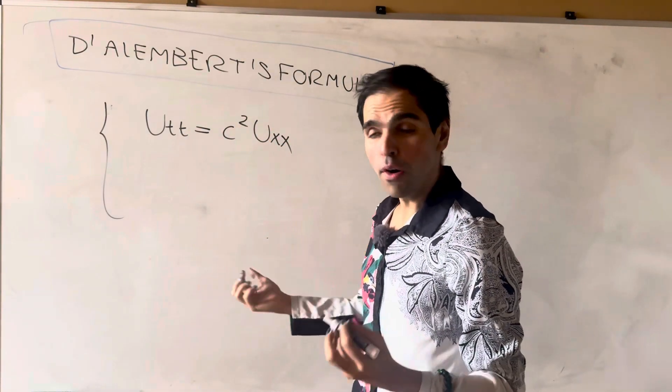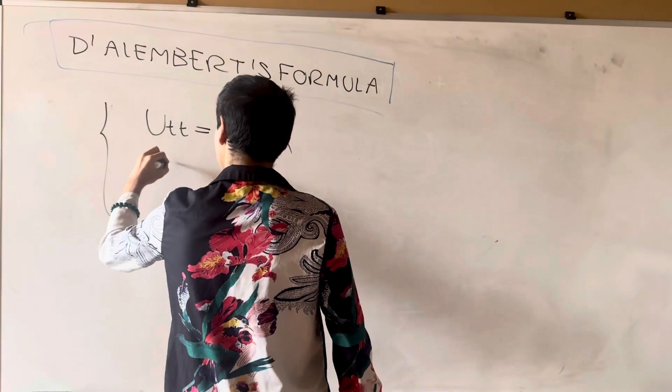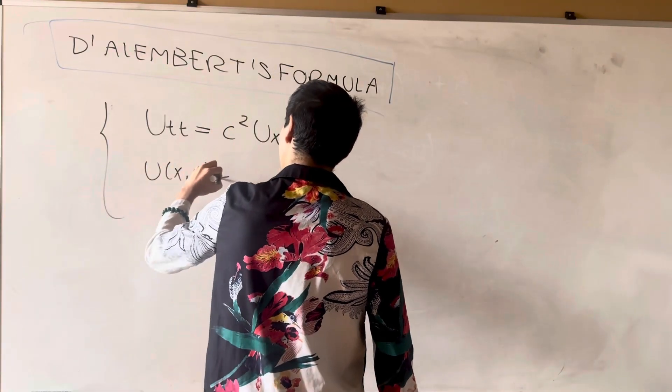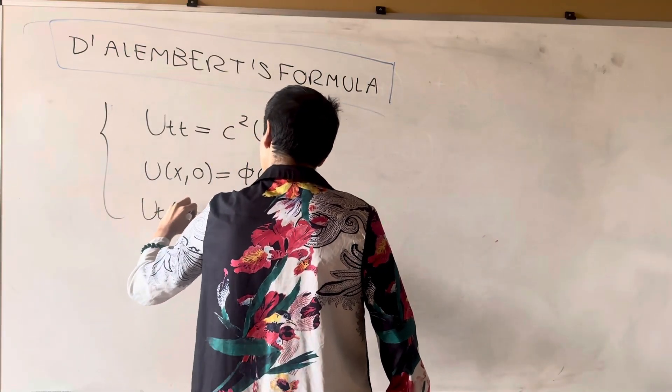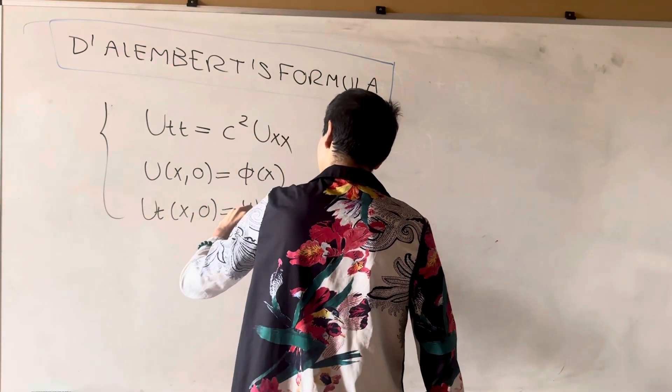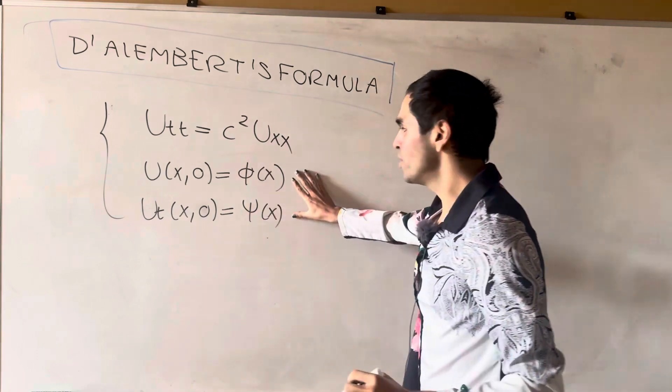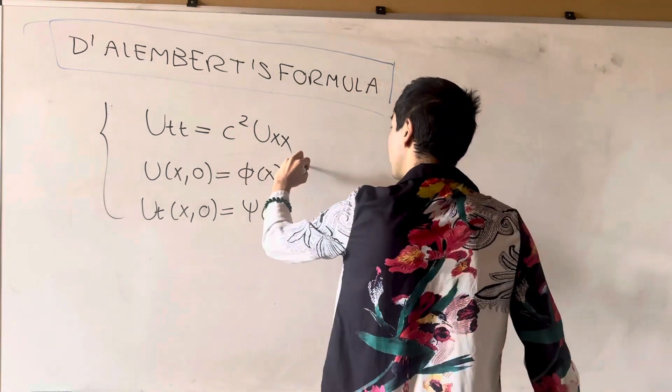And now let's impose an initial position, so u of x zero is phi of x, and an initial velocity, u_t of x zero is psi of x. So this is kind of new, but also given.